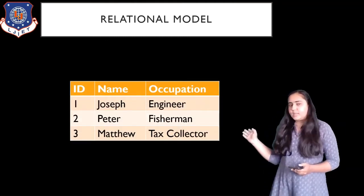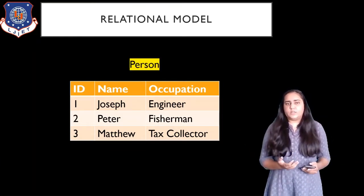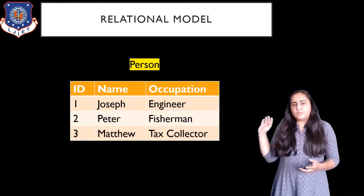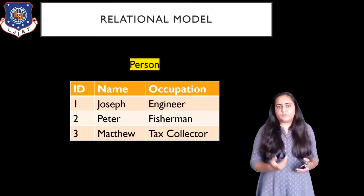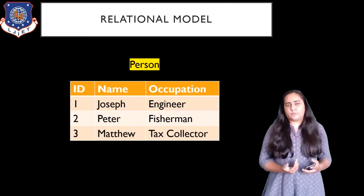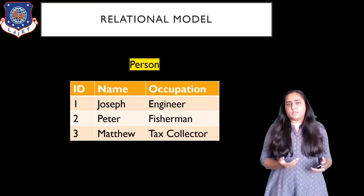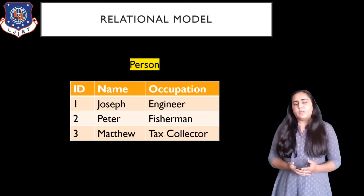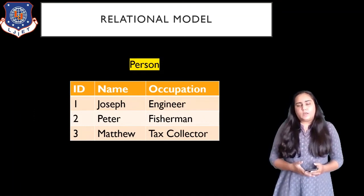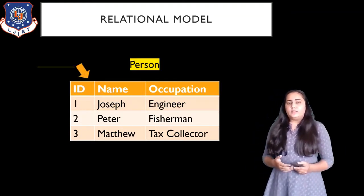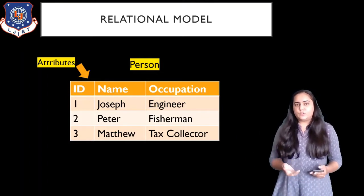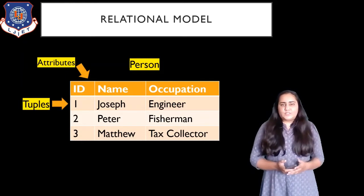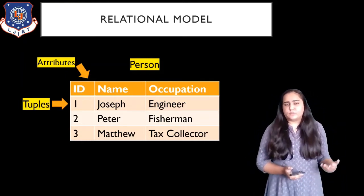Let me begin with an example. What you see here is a table — I would call it a relation because it's a relational model. I've named the table 'person', and it describes the ID, the name, and the occupation of a person. There are three people — Joseph, Peter, and Matthew — with occupations engineer, fisherman, and tax collector, and IDs one, two, and three. In this table, the columns ID, name, and occupation are attributes, and all the rows are called tuples.